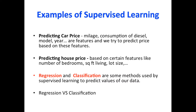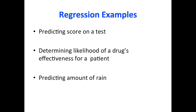Regression and classification are some methods used by supervised learning to predict values of our data. Let's see regression and classification. The following are examples of regression: predicting score on a test, determining likelihood of a drug's effectiveness for a patient, and predicting amount of rain.